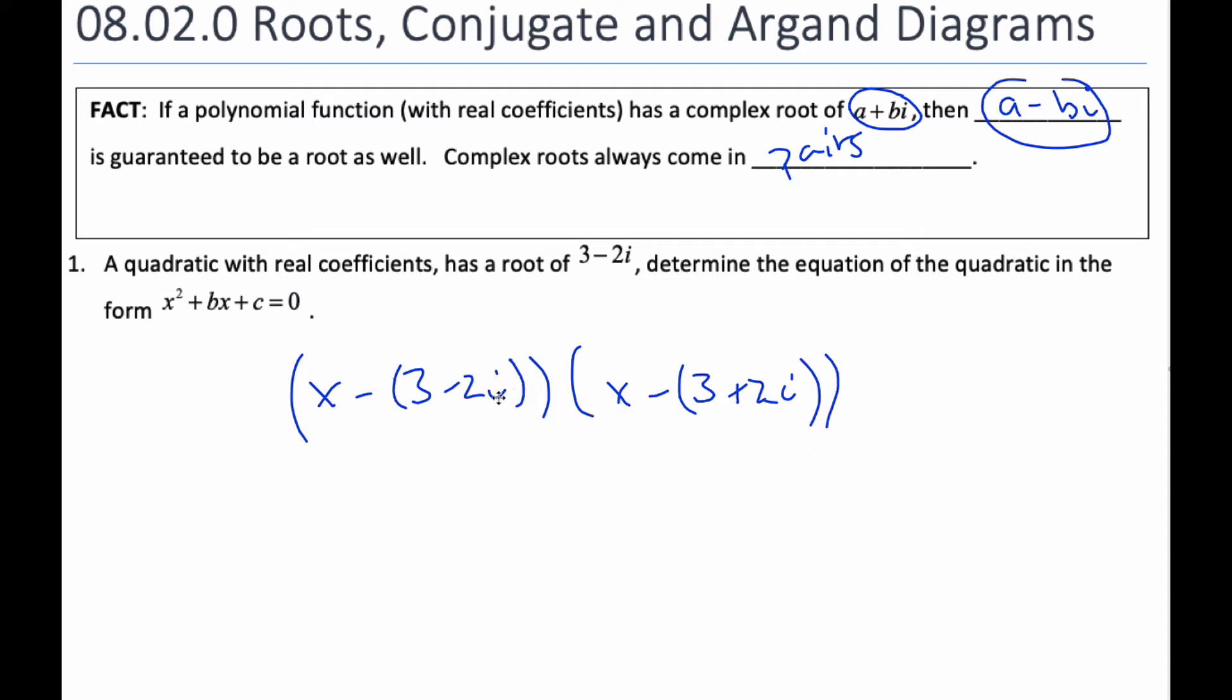Now, one of the tricks that I can do is if I rewrite this with my parentheses in a different way. I'm going to distribute the negative, it'll be plus 2i, plus 2i. And the same thing here, I'm going to distribute the negative, but I'm going to put it in these parentheses as minus 2i.